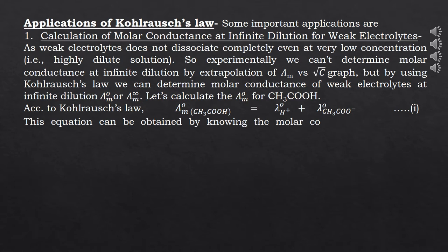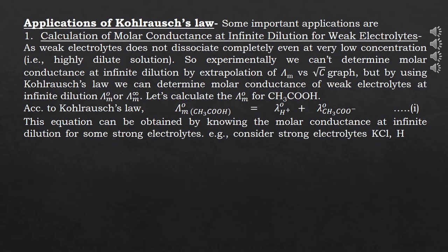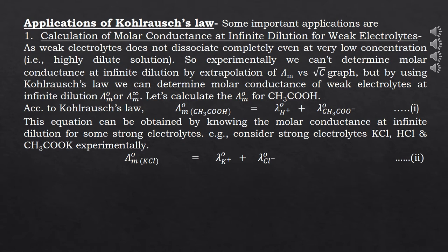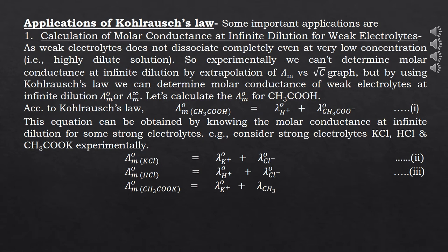This equation can be obtained by knowing the molar conductance at infinite dilution for some strong electrolytes. For example, consider strong electrolytes like KCl, HCl, and potassium acetate experimentally. According to Kohlrausch's law: λM0 for KCl equals λ° for K⁺ ion plus λ° for Cl⁻ ion (equation 2); λM0 for HCl equals λ° for H⁺ ion plus λ° for Cl⁻ ion (equation 3); and λM0 for potassium acetate equals λ° for K⁺ ion plus λ° for acetate ion (equation 4).